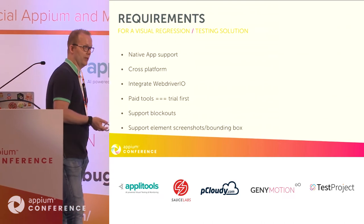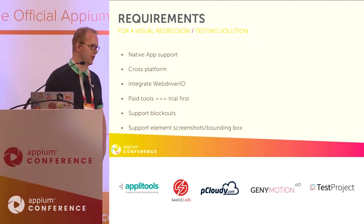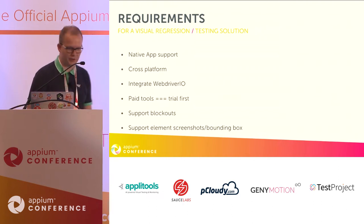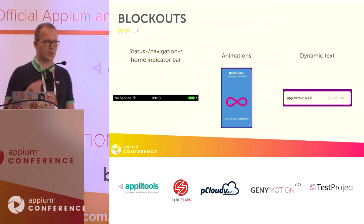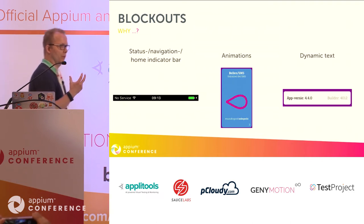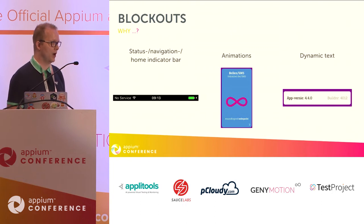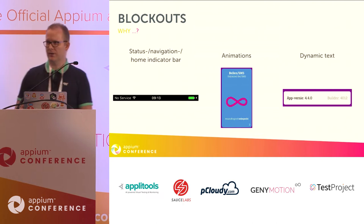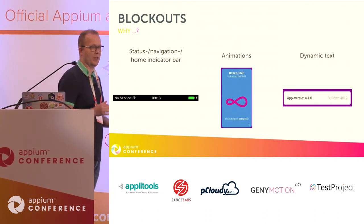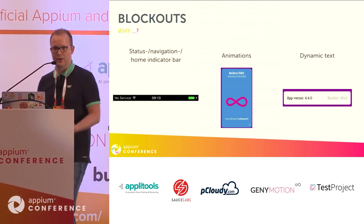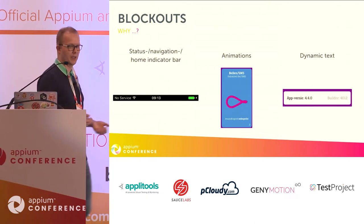We saw some paid tools and wanted a trial first. We also wanted the tool to support blockouts and element screenshots with bounding boxes. You might wonder why an image comparison tool needs that — basically for three reasons. When you take a screenshot of a native application, you get a full page screenshot including the status bar and toolbar on Android, which you wouldn't get with a web screenshot. Disabling animations is also harder with native apps than web. And we had dynamic text like build number and app version that you can't easily make static in a native app.